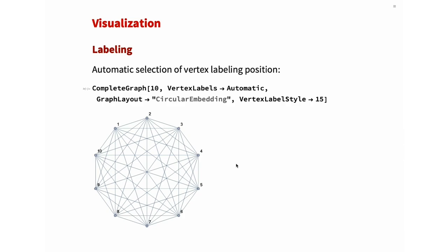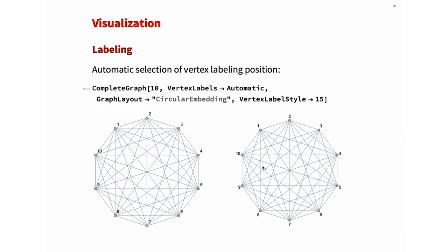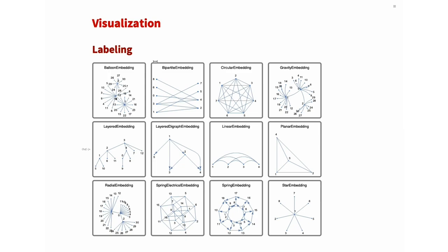So we developed new automatic behavior that works best for each specified embedding or layout. For example, here you see the graph layout with circular embedding. And if you check this same command in latest Mathematica, now you see all the labels placed outside of graph drawing, not intersecting any edges or vertices. So this is not just for circular embedding. Here I will show you the gallery of how this new automatic behavior looks at different embeddings. For example, like balloon embedding, bipartite embedding, circular embedding, and gravity.